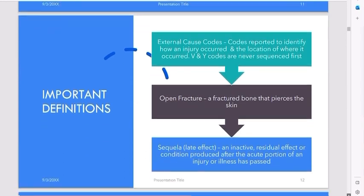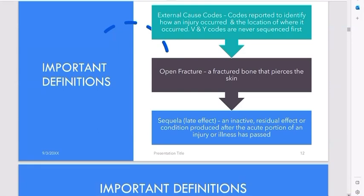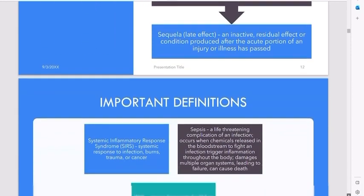So, open fracture. An open fracture is one that pierces the skin — a fractured bone that pierces the skin. This is an important word to know as well: sequela. Some people say sequelae. That means a late effect — an inactive residual effect or condition produced after the acute portion of an injury or illness has passed. For example, if a person had a stroke and after the stroke they noticed their eye twitches nonstop, and the doctor says their eye is twitching due to the stroke, that eye twitching is called a sequela of the stroke — the late effect of having had a stroke. That's sequela: something that happens to you after a disease or injury.